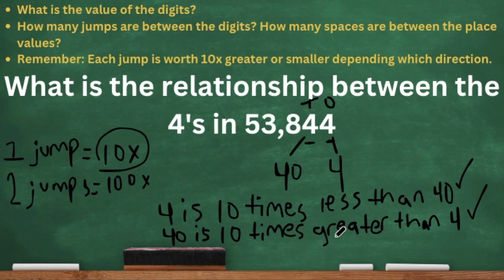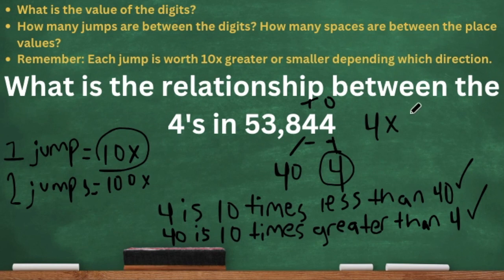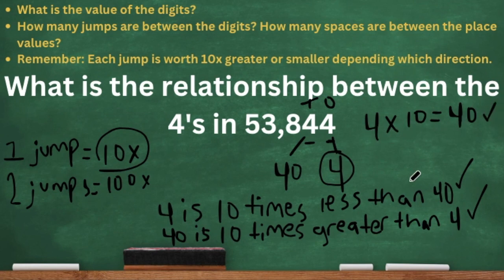I know this seems like a lot, but just hang in there. When we want to have an equation to match those statements, we can start with our smaller digit, which is the four. Think about how many jumps we got to make between both those digits — one jump is 10. So that's why we did four times 10, and four times 10 is 40. This expression that we just created matches the statements that you see here.